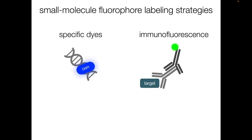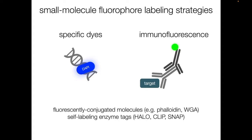There are many other ways to label biological samples with fluorophores. Examples include conjugating fluorophores to biomolecules that have some specificity, like phalloidin, which binds to actin, and self-labeling enzyme tags, for example, halo tags. And of course, there are many other strategies that we won't get into here.